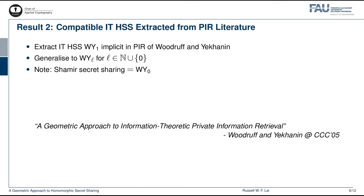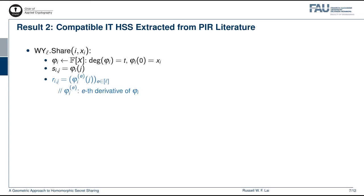Let's now move to the second result, that is to extract an IT-HSS scheme from the PIR literature. Specifically, we are going to extract the scheme which we called WY1, which was implicit in the private information retrieval scheme of Woodruff and Yekhanin. We then generalize the WY1 scheme to the WYL scheme for all natural numbers L, as well as L equals 0. Note that when L equals 0, we recover the Shamir secret sharing scheme. The best way to explain the WYL scheme is to show you the algorithms. First, the share algorithm. As in the Shamir secret sharing scheme, the input client samples a degree T polynomial phi_i, such that phi_i evaluated at 0 is x_i. Then the j-th share is just phi evaluated at j. For L greater than 0, the input client is also going to compute all the derivatives of phi_i up to order L and evaluate them at j for all j. These derivatives will then be used as recovery information.